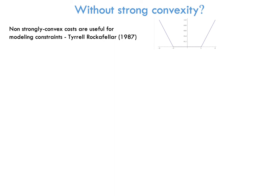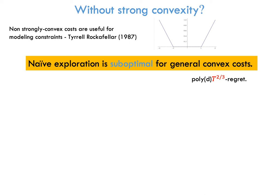So, this begs the question, what if we don't have strong convexity? This is an important question, because non-strongly convex costs, like piecewise linear costs, are useful for modeling constraints, and constraints are crucial for safety in control.